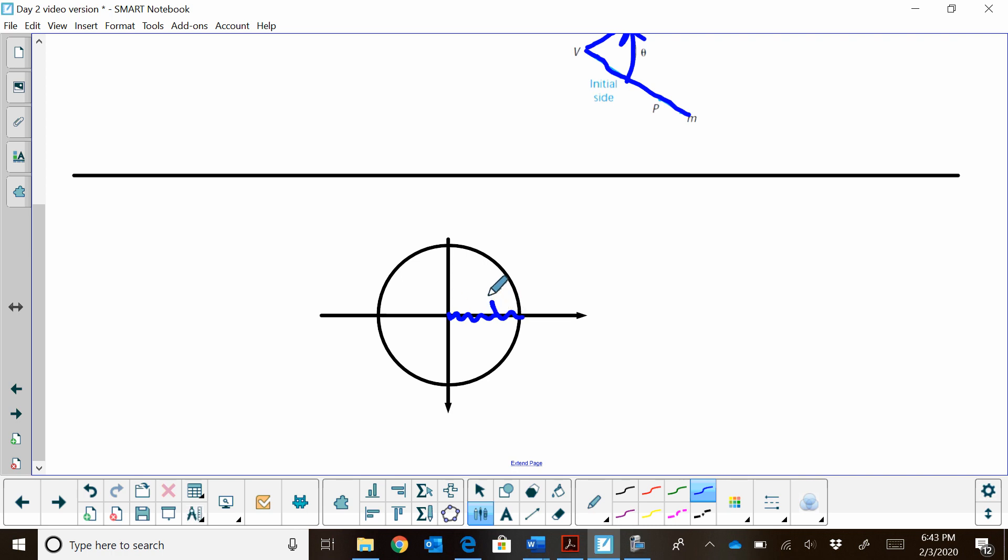And for our positive angle, we're going to rotate around, and then when we stop, that's going to create the angle. So we're going to start here on the positive x-axis, and we're going to rotate, and we're going to stop right here.